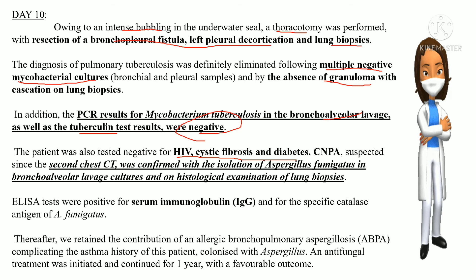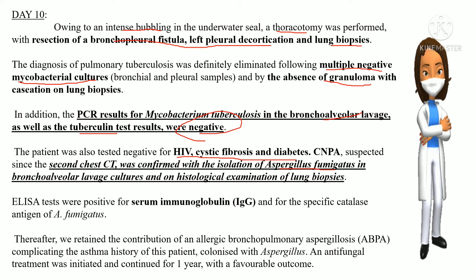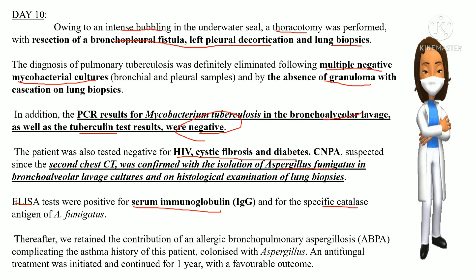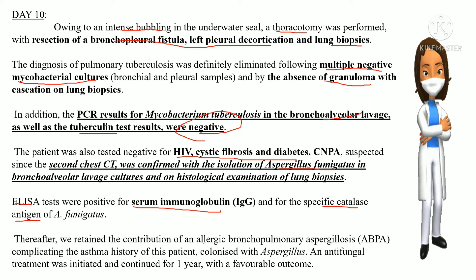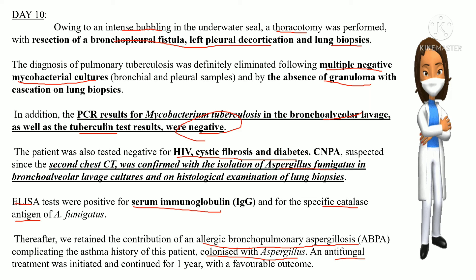The patient tested negative for HIV, cystic fibrosis, and diabetes. Chronic necrotizing pulmonary aspergillosis was suspected after the second chest CT scan, with isolation of Aspergillus in the bronchoalveolar lavage cultures and on histological examination of lung biopsies. ELISA test was positive for serum immunoglobulin and specific Aspergillus antigen. Allergic bronchopulmonary aspergillosis complicating the patient's asthma history was confirmed, and antifungal treatment was initiated and continued for one year with a favorable outcome.